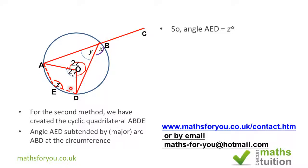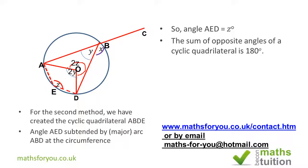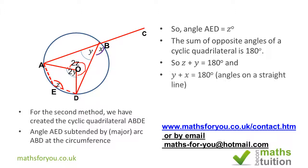ABDE being a cyclic quadrilateral, the two opposite angles add up to 180 degrees. So Y + Z = 180 degrees. And for the straight line, as from the last slide, Y + X = 180 degrees, because the angles on a straight line add up to 180. Which means Y + Z equals Y + X, both being 180. If we subtract Y from both sides, the Ys cancel out, and we find that Z = X.